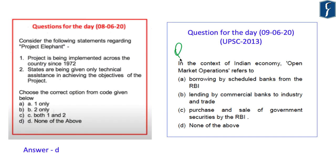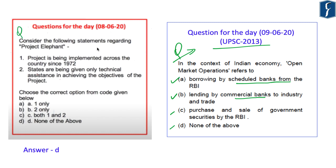The question for the day, previously asked by UPSC in 2013: 'In the context of the Indian economy, open market operations refers to: (A) borrowing by scheduled banks from the RBI, (B) lending by commercial banks to industry and trade, (C) purchase and sale of government securities by the RBI, or (D) none of the above.' The answer to yesterday's question on Project Elephant: the first statement — that the project is being implemented since 1972 — is incorrect as it started in 1992; the second statement is also incorrect. Hence the correct answer was D, none of the above. With this we come to an end to today's discussion.